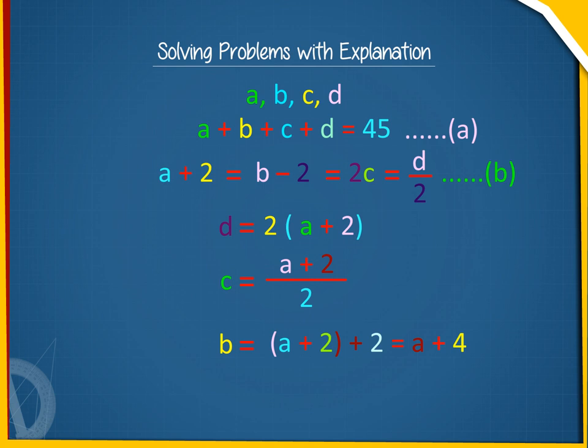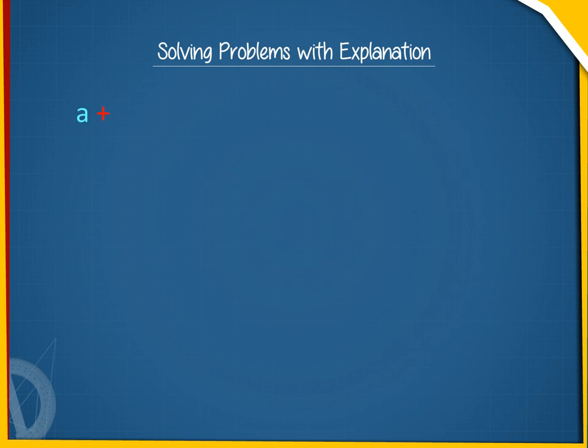Substituting these values in a, we have a plus a plus 4 plus a plus 2 divided by 2 plus 2 into a plus 2 equals to 45.